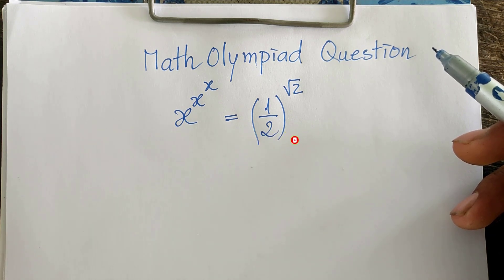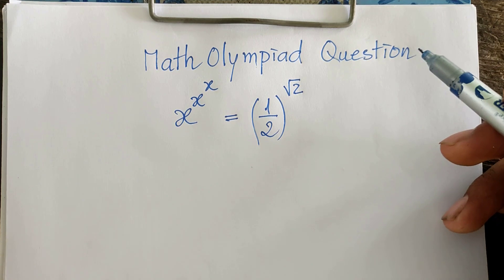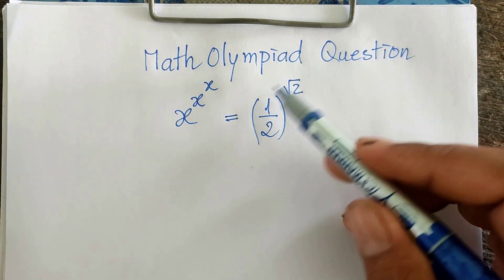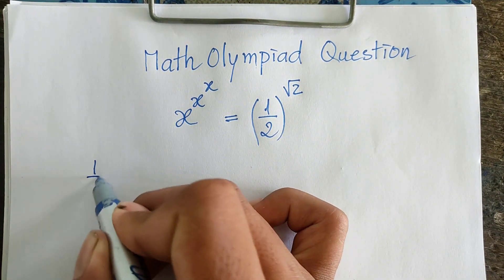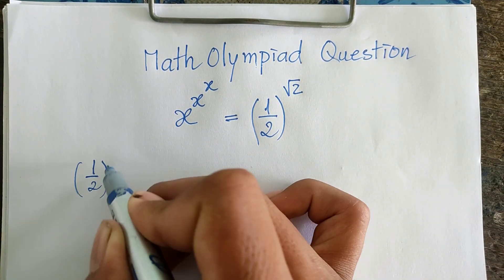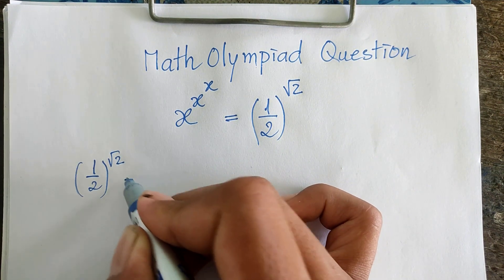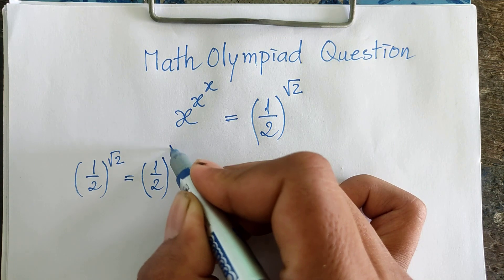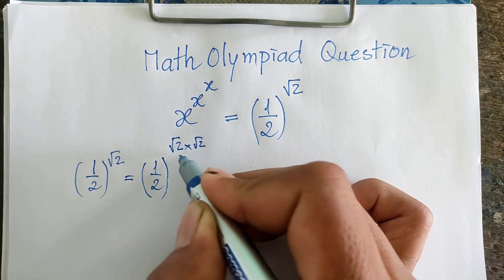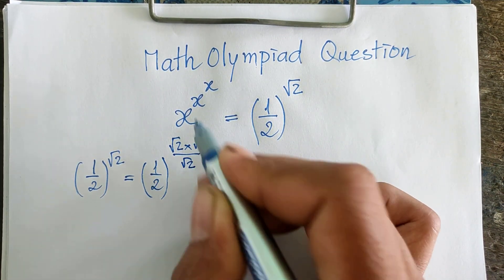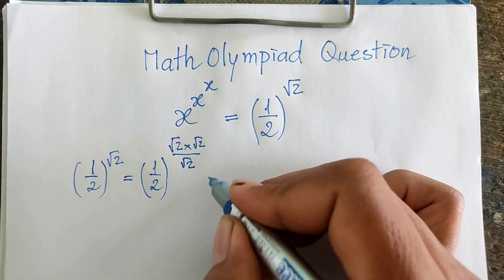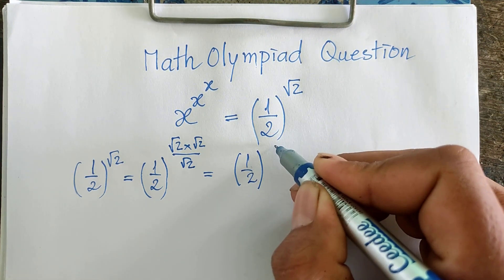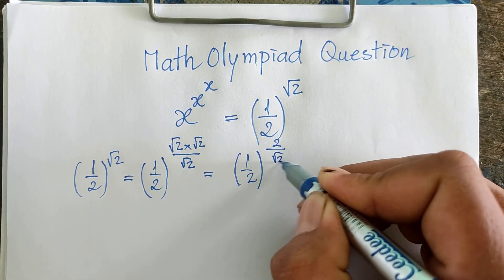Okay, now we go to the solution together. To show this equation, I have one trick. I use this: if we have 1 divided by 2^(√2), I can also write it as 1 divided by 2^(√2) multiplied by √2 and divided by √2, and it's equal to 1 divided by 2^2, all divided by √2.